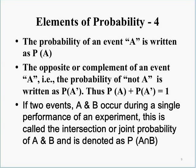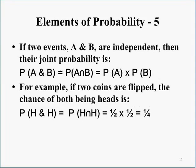If two events A and B occur during a single performance of an experiment, this is called the intersection, or joint probability of A and B, denoted as P(A ∩ B). If two events A and B are independent — meaning they have no relationship to each other — then their joint probability P(A ∩ B) equals the probability of A times the probability of B.